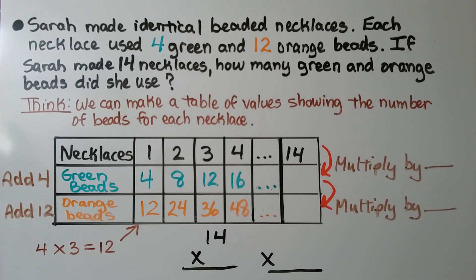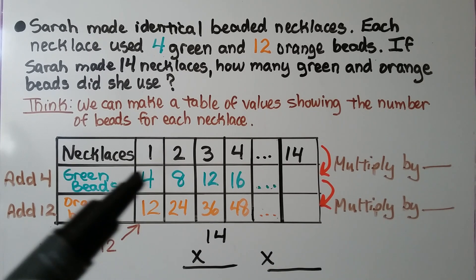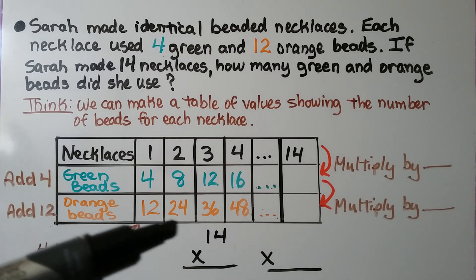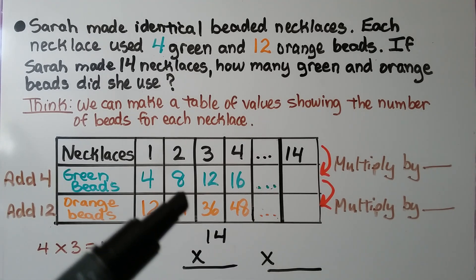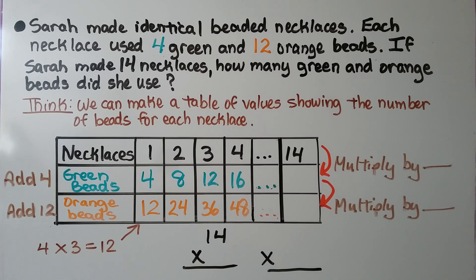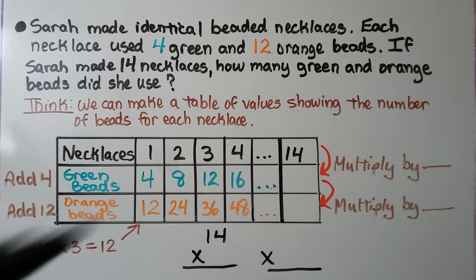Sarah made identical beaded necklaces. Each necklace used 4 green and 12 orange beads. If Sarah made 14 necklaces, how many green and orange beads did she use? We can make a table of values showing the number of beads for each necklace. If she makes one necklace, she uses 4 green beads and 12 orange beads. If she makes two necklaces, she would use 8 green beads and 24 orange beads. The rule for green beads is to add 4, and the rule for orange beads is to add 12. But what about 14? We could make a very long table adding 4 and 12, or we could find a multiplication rule.